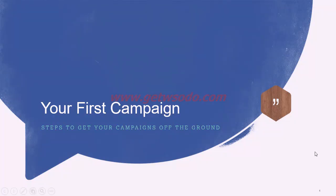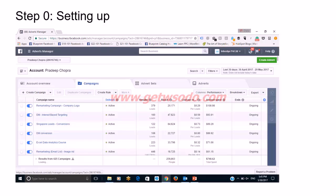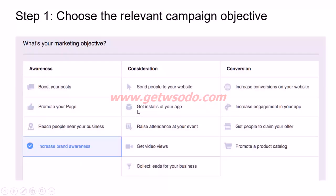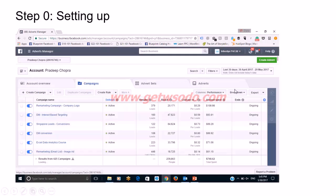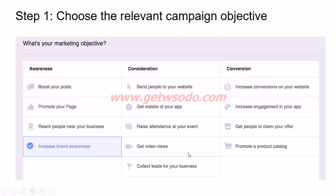Let's start with how to set up a campaign. I'll first show you through the slides the basic steps, then take you through the Ad Manager tool. The first step is to choose a relevant campaign objective. If you already have an account, this is how your dashboard looks. When you start a new campaign, you are first asked to choose a marketing objective.